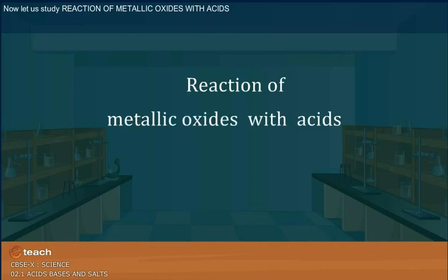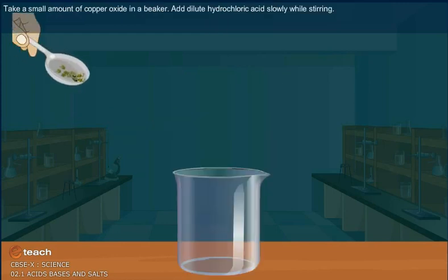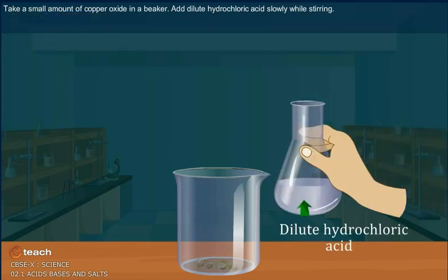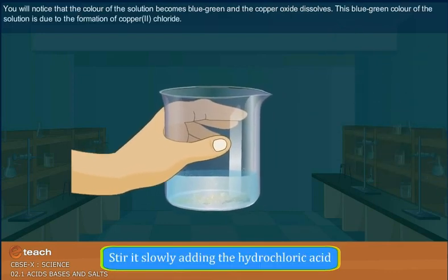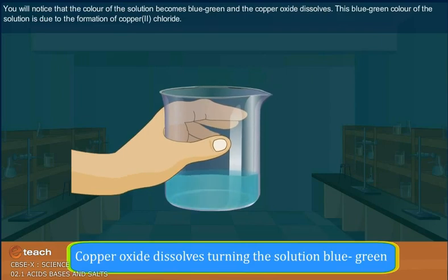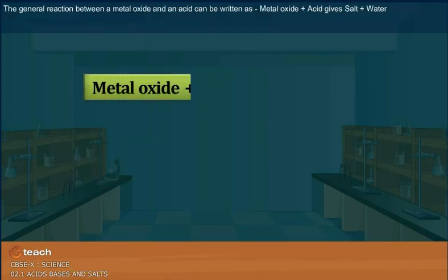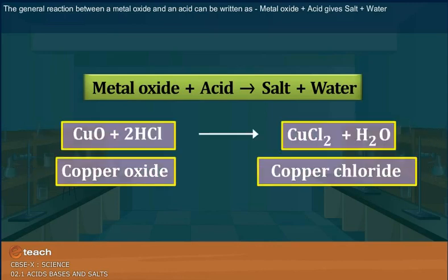Let us study the reaction of metallic oxides with acids. Take a small amount of copper oxide in a beaker and add dilute hydrochloric acid slowly while stirring. You will notice that the color of the solution becomes blue-green as copper oxide dissolves, due to the formation of copper(II) chloride. The general reaction is: metal oxide plus acid gives salt and water.